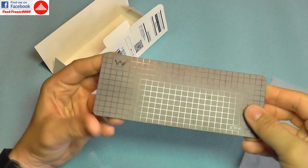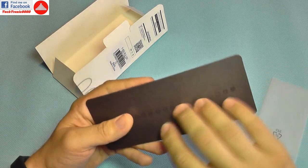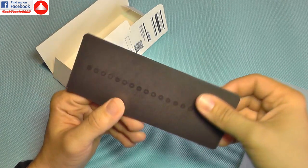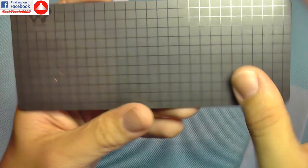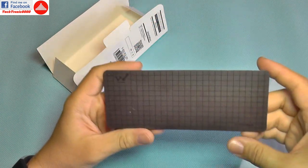You can see it's kind of flexible. It's rubber-coated, so it does not slip, and it has these nice squares.